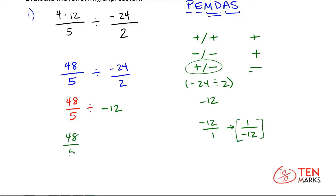So let's replace that in. You have 48 over 5 times the reciprocal of negative 12, which is negative 1 over 12. Now I put the negative sign up here, but it's the same thing. Negative 1 over 12 is the same thing as 1 over negative 12, so you don't have to worry about that. Now let's continue solving.